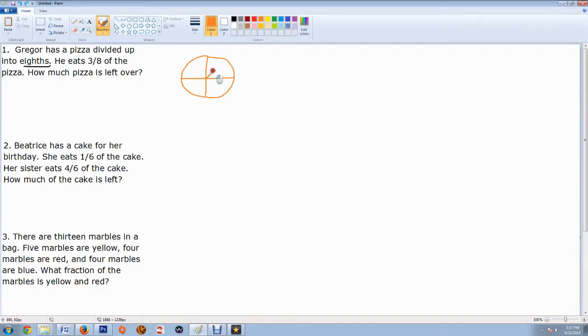I can actually probably do that. It makes it a little bit more better, sort of. All right, so he has a pizza divided into eighths. He eats three-eighths of the pizza, so that means he eats three of the eight pieces. And how much pizza is left over?